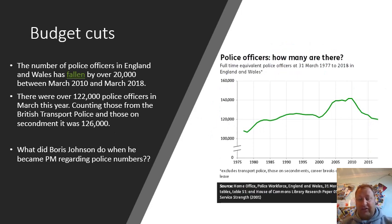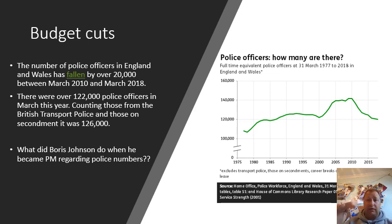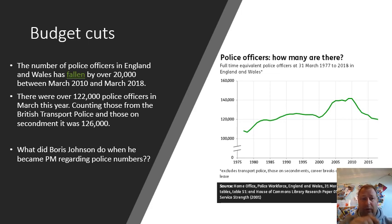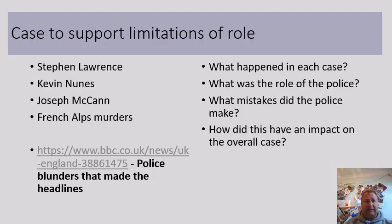Linked to budget cuts is the dramatic fall in police officer numbers over the past decade. Meanwhile, the population has risen massively over 45 years while police levels have only risen slightly — by about 10,000. Boris Johnson pledged 20,000 more police officers when he became Prime Minister, so we'll see if that materializes.